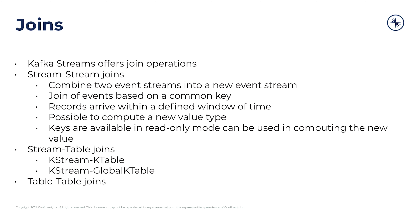Lastly, the third type of join that Kafka Streams offers is the table-table join. The table-table join, like the stream-table join, is not windowed. And unlike the previous two join types, the table-table join is going to result in another table. The table is only ever dealing with table records, which are updates — they reflect the latest value of a record with that key. Thus the output of this table-table join makes sense that it would only be reflecting a table, which represents the latest value for these keys.